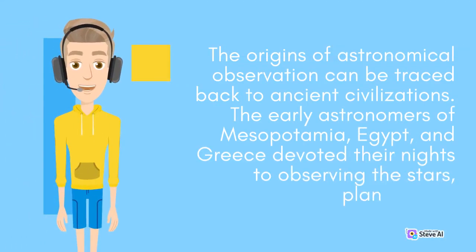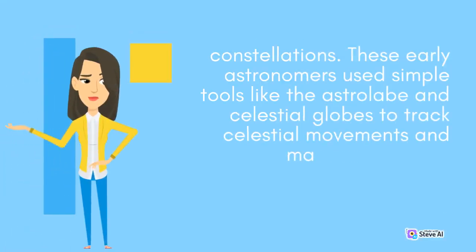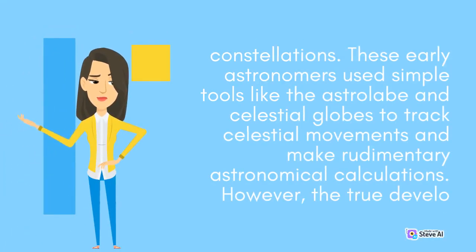The origins of astronomical observation can be traced back to ancient civilizations. The early astronomers of Mesopotamia, Egypt, and Greece devoted their nights to observing the stars, planets, and constellations. They used simple tools like the astrolabe and celestial globes to track celestial movements and make rudimentary astronomical calculations.